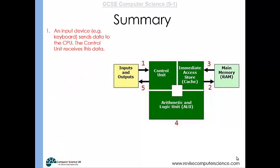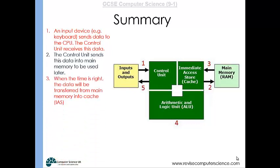If you were to type something on your keyboard or click the mouse button, then those instructions are then sent to the CPU. The control unit will receive that data and then it might send that data to main memory to be used later on. When the time is right, the data will be transferred from main memory to the registers of the CPU, the immediate access store.